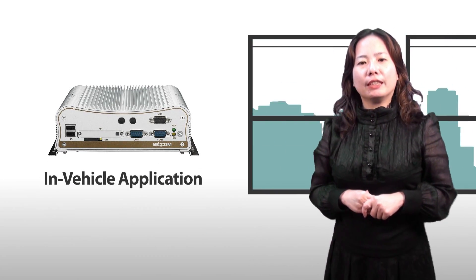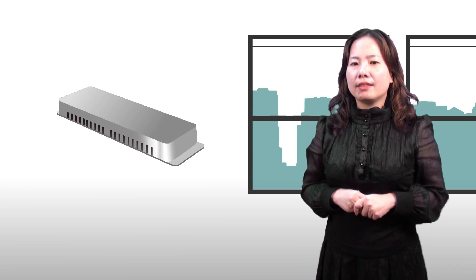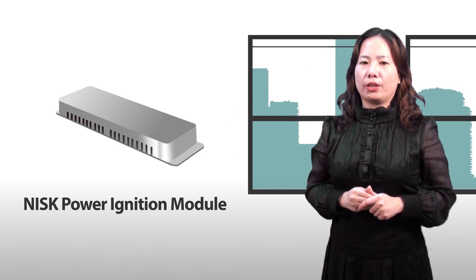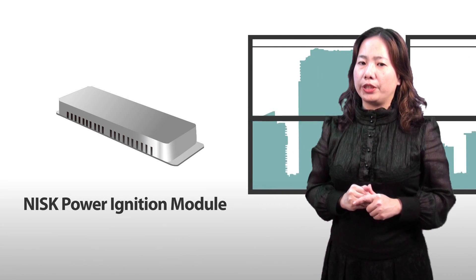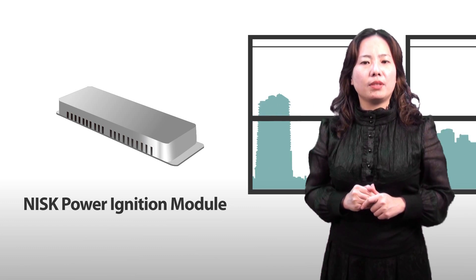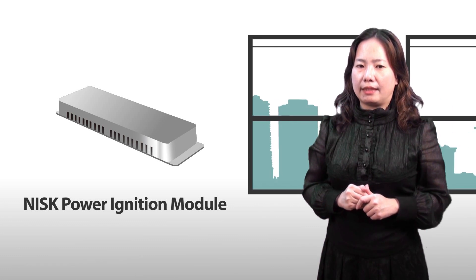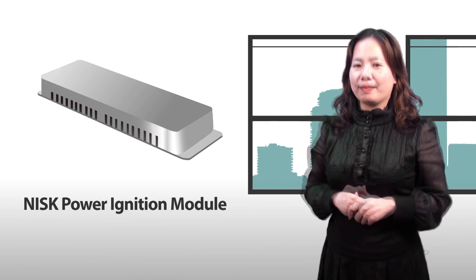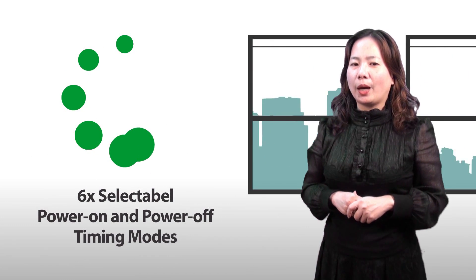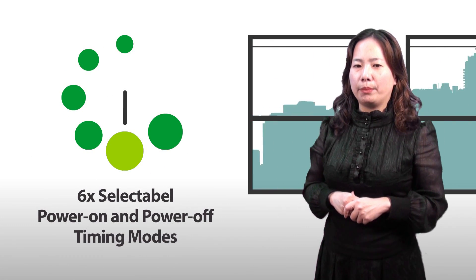For in-vehicle applications, you may not want to miss this Nice power ignition module. This optional module protects the system from damage caused by unstable power supply in the bus. There are six selectable power-on and power-off timing modes in the module, and the delay time can be activated through these settings.